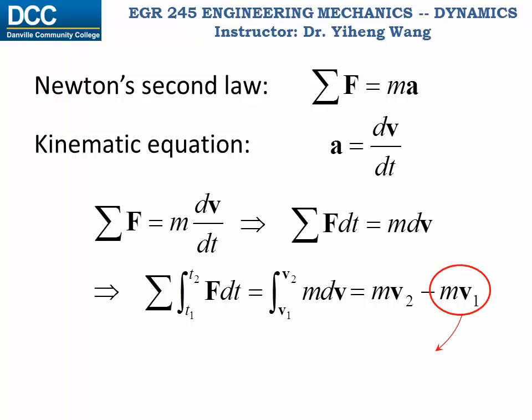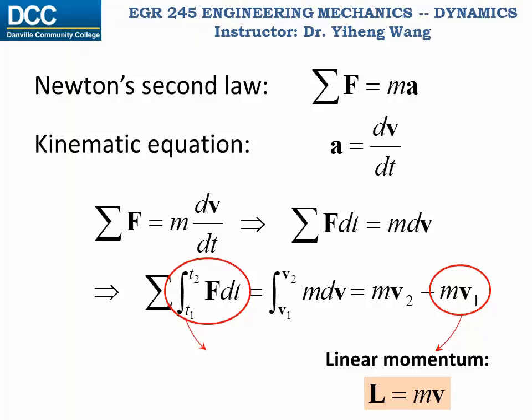To replace mv, we define the linear momentum L, which equals m times velocity v. Both L and v are vectors. For the left-hand side, we define a new parameter called the linear impulse I, which equals the integration of force with respect to time for a process.